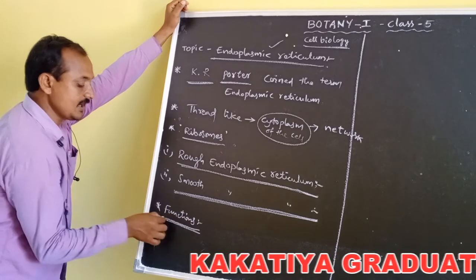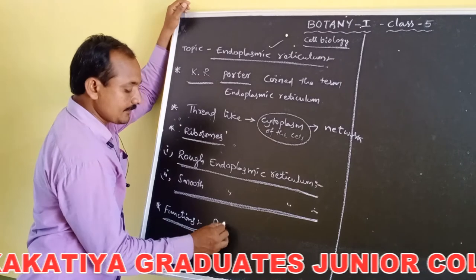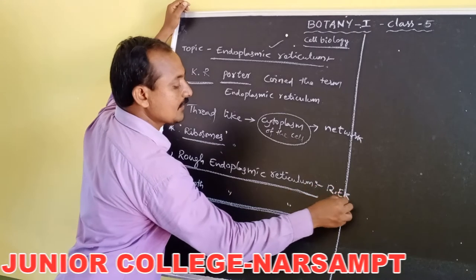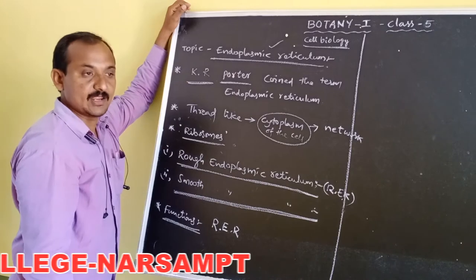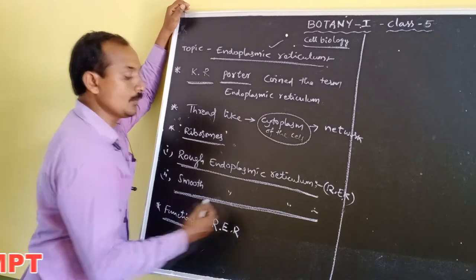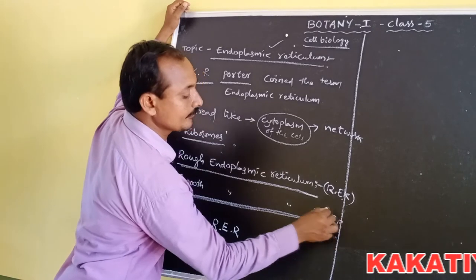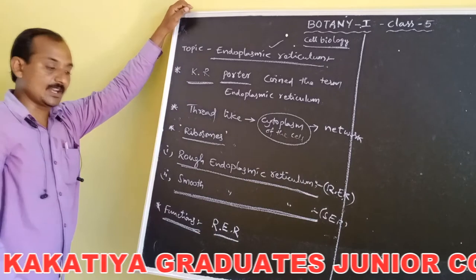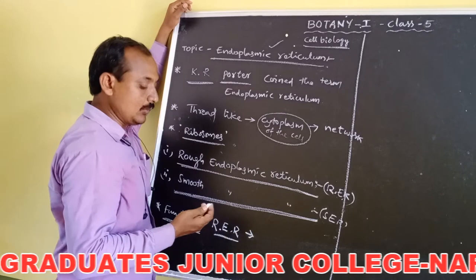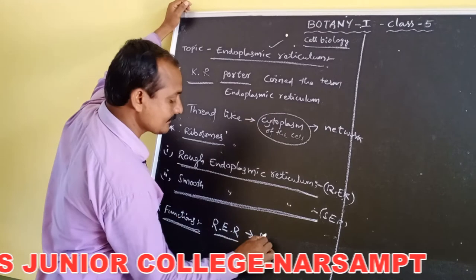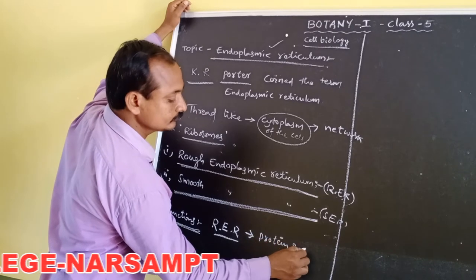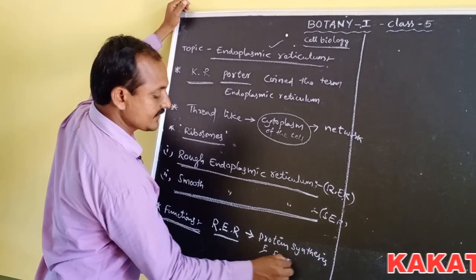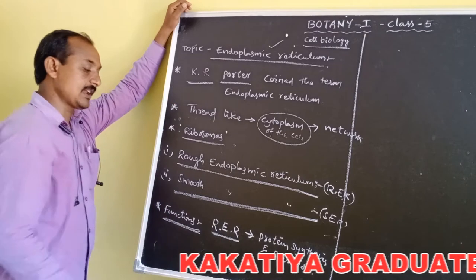The functions of the endoplasmic reticulum: rough endoplasmic reticulum, short form RER, and smooth endoplasmic reticulum, short form SER. The main function of rough endoplasmic reticulum is that it actively involves in protein synthesis and secretion.